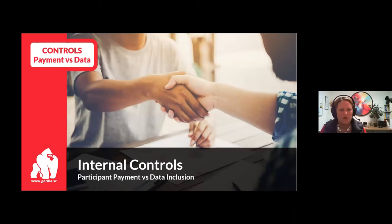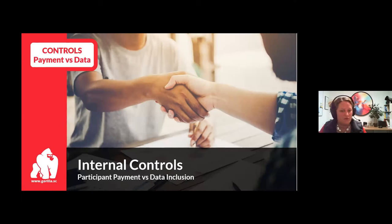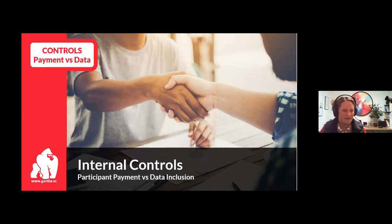Based on your quality controls, you're going to make two separate decisions: whether to pay participants, and whether to include their data in your analysis. It's important to separate those two ideas. The general rule is that you should pay for the work regardless of quality and not hire them again if they didn't do good work — the same way that if you go to a restaurant, you'd pay for the food regardless of quality but wouldn't go back if you didn't like it.